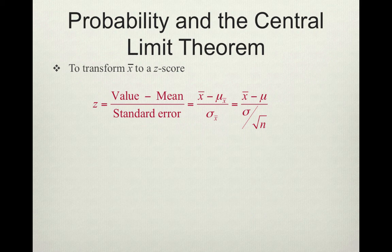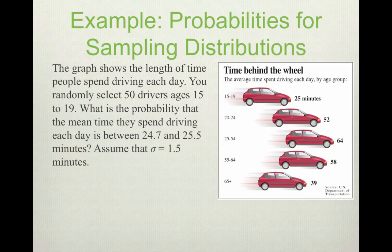We can transform x-bar to a z-score. This z-score formula should look very familiar: we take our sample mean minus the population mean, divided by our standard error. This is a slight variation of the z-score formula because we're dealing with the sampling distribution of the sample mean.